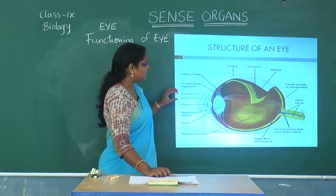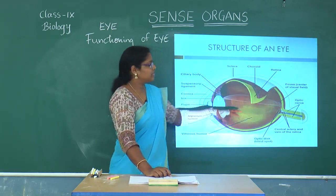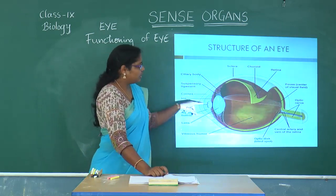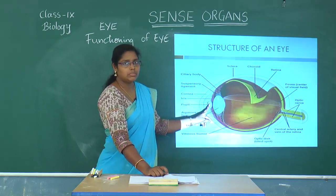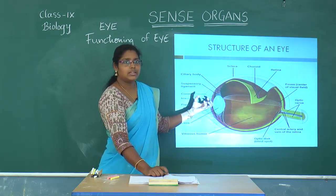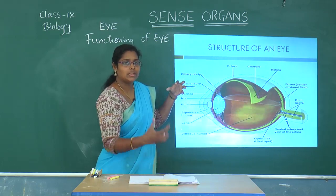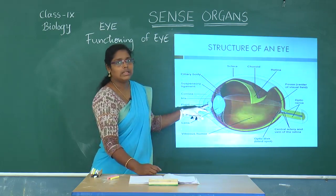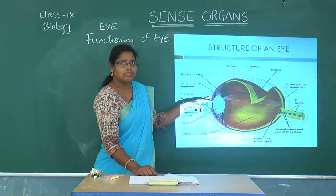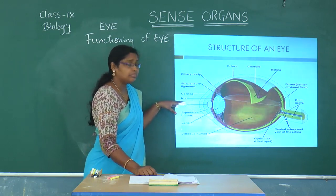We can see that this is the outer part of the eye, which is protected inside the skull. When light enters the eye, it passes through an aperture called the pupil. The dilation and constriction of this pupil depends on the iris. When the iris contracts, the pupil dilates — its size increases — and when the iris relaxes, the pupil constricts and its size decreases.